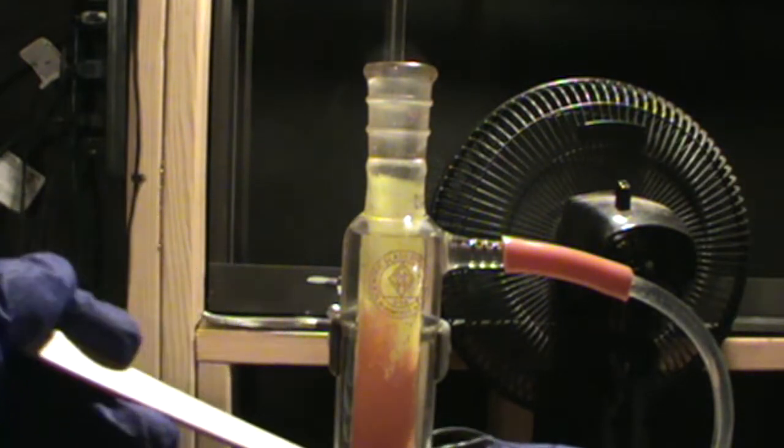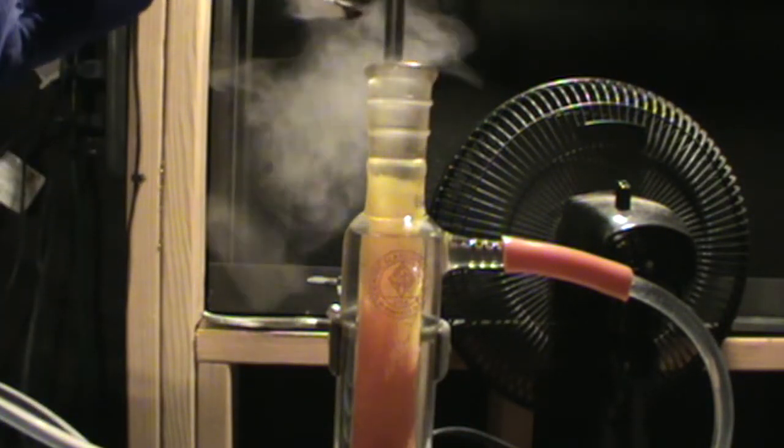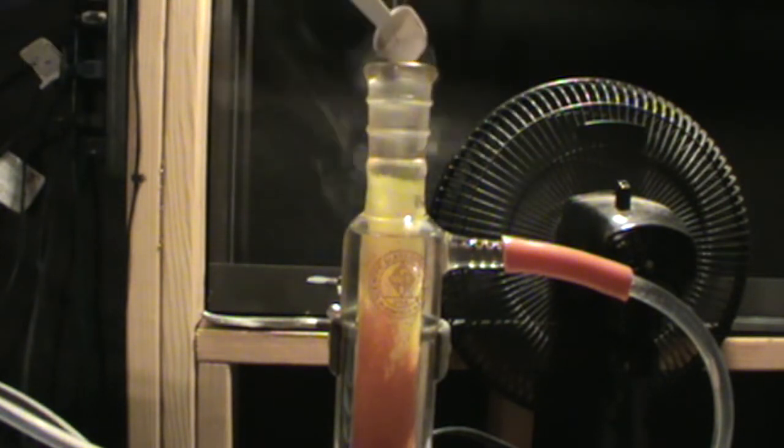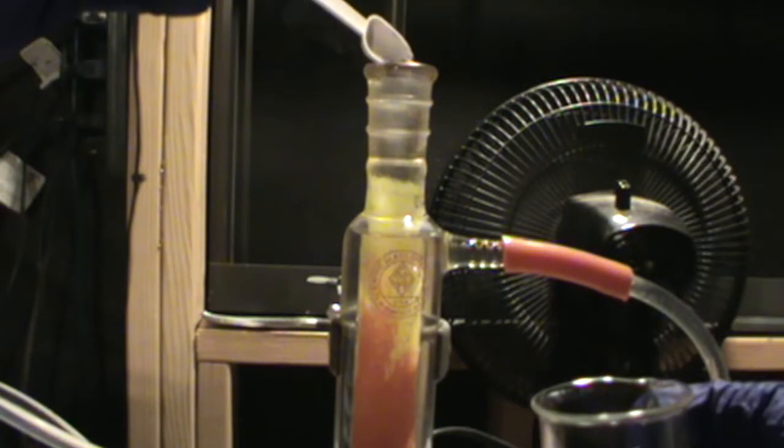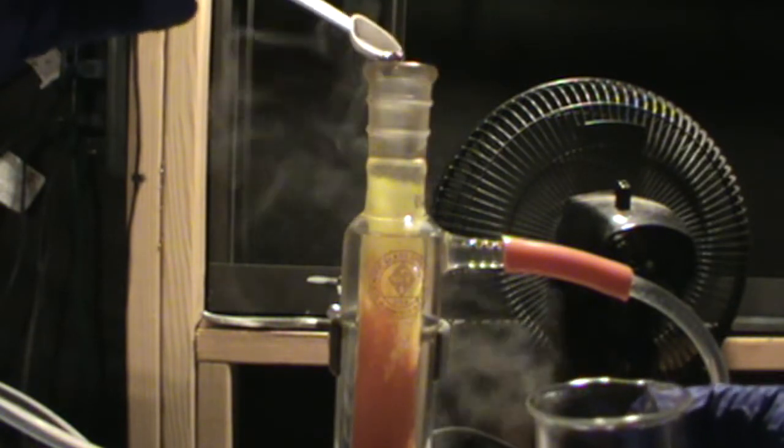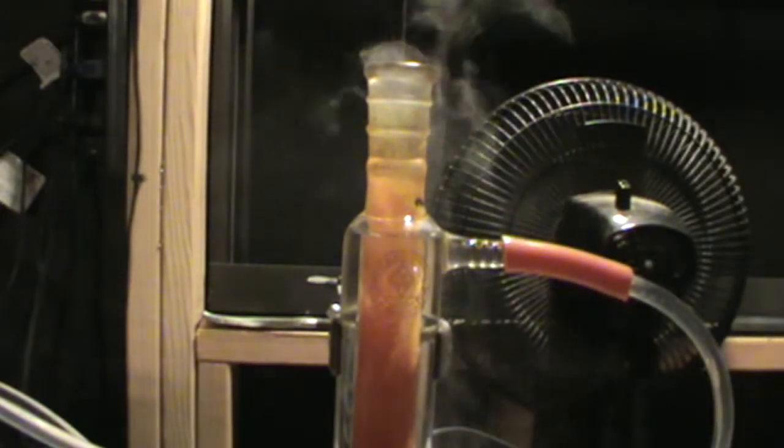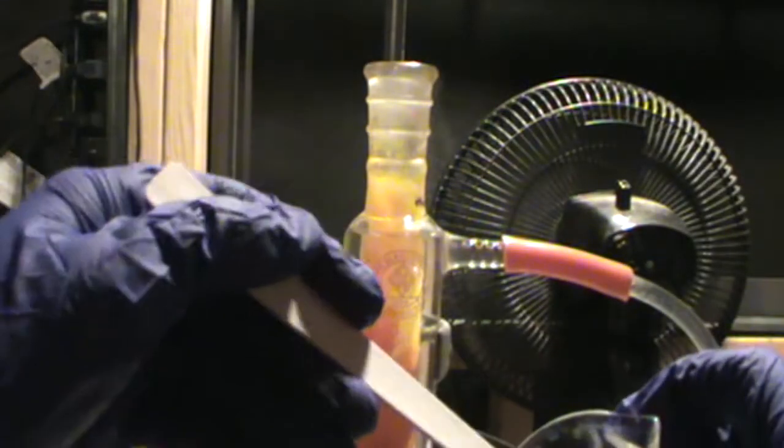The yellow-orange substance coating the sides of the condenser is mostly phosphorus pentabromide. This is formed when phosphorus tribromide reacts with excess bromine. Phosphorus pentobromide will decompose under heating to form phosphorus tribromide and bromine. This bromine can then be reacted with excess phosphorus, so that all of the product will be phosphorus tribromide.